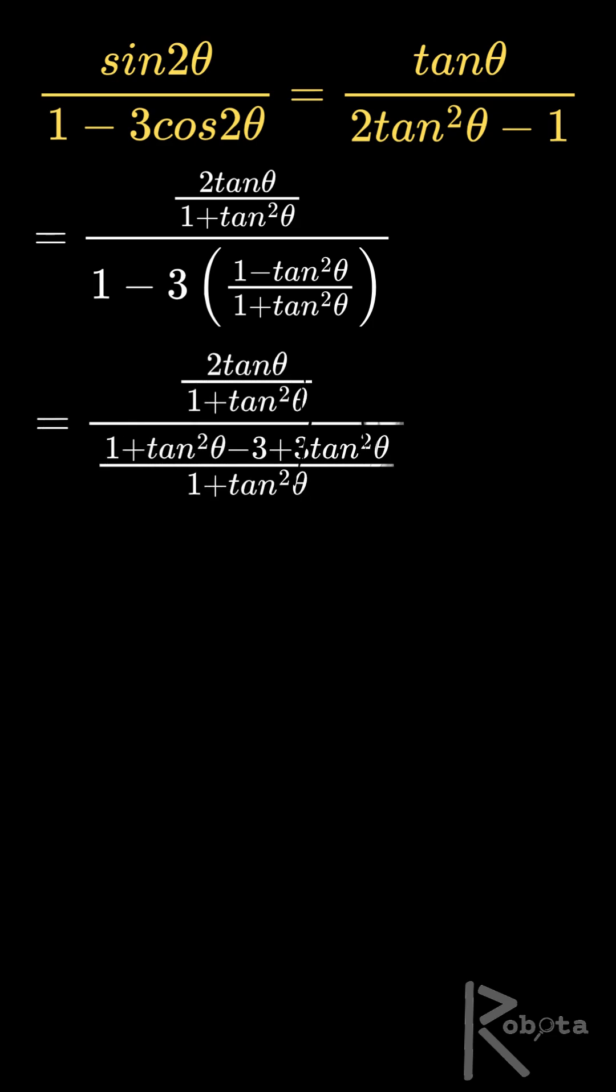Now combine this into a single fraction. Take the common denominator and simplify. Look, the 1 plus tan squared theta terms cancel out. We're left with 2 tan theta over 4 tan squared theta minus 2.